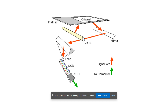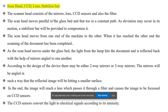As the scan head moves under the glass bed, the light from the lamp hits the document and is reflected back with the help of mirrors angled to one another. According to the device design, there may be two-way or three-way mirrors, angled so the reflected image hits a smaller surface. Finally the image reaches a lens which passes it through a filter, focusing it on the CCD sensors. The CCD sensors then convert the light to electrical signals according to its intensity.